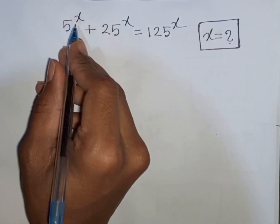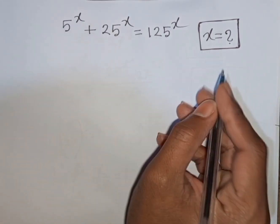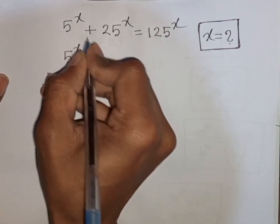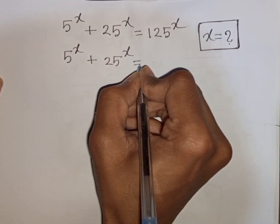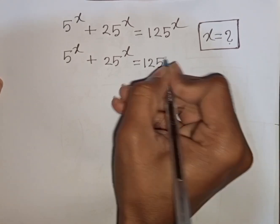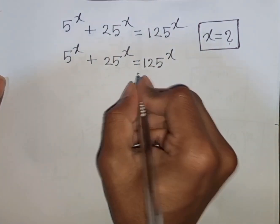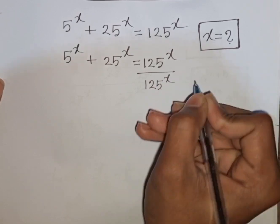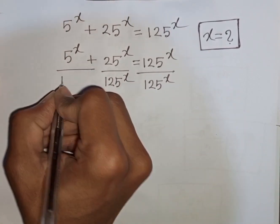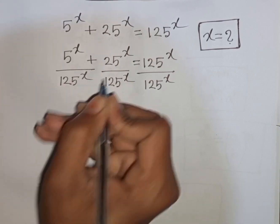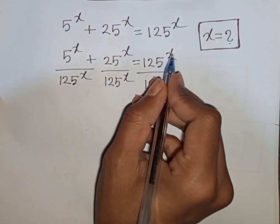How to solve 5 power x plus 25 power x is equal to 125 power x — find the value of x. We divided by 125 power x on both sides. So divided by 125 power x, and this 125 power x will be cancelled.